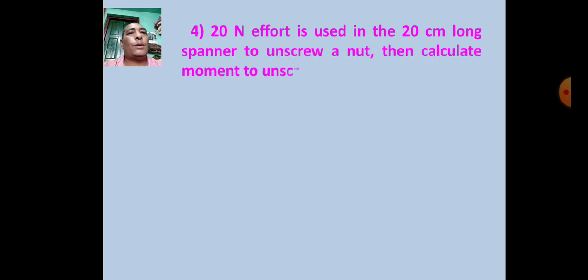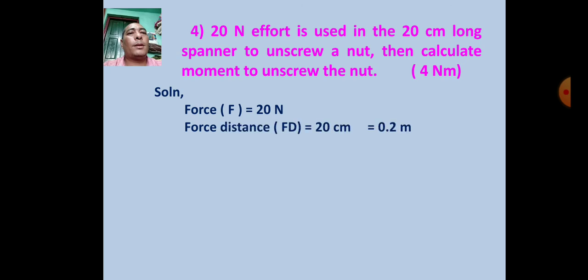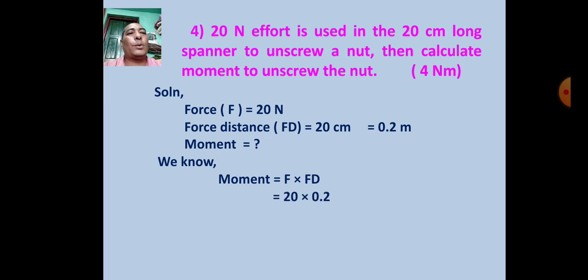Numerical 4: 20 Newton effort is used in a 20 cm long spanner to unscrew a knot. Calculate the moment. Solution: F = 20 N, FD = 20 cm = 0.2 m. Moment = F × FD = 20 × 0.2 = 4 Newton meter (4 Joule).